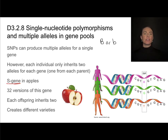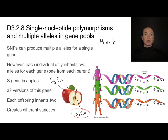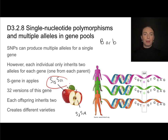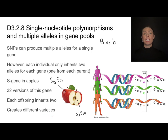For example, there's an S gene in apples, and there are actually 32 versions of that gene — 32 alleles. Each individual inherits two of them. So one apple might have S15 and S31 as its alleles, while another apple has S2 and S19. So there are very different genotypes because of the variation in possible alleles. When you mate together individuals with different combinations of alleles, that is how we create different varieties within the same species.